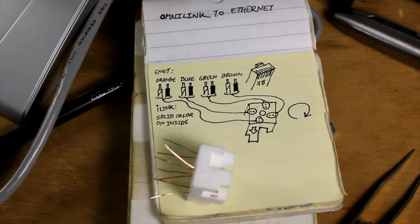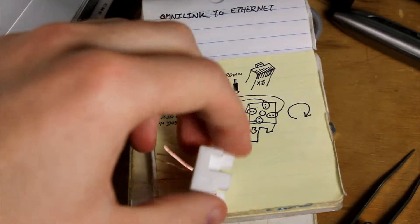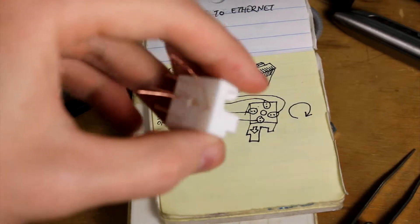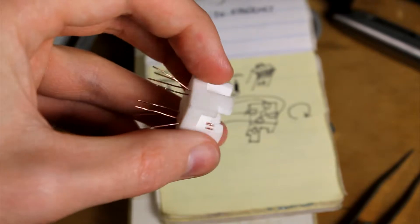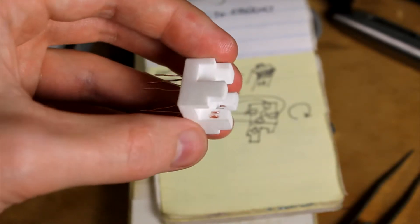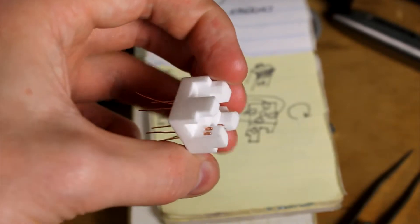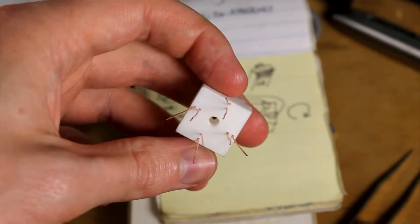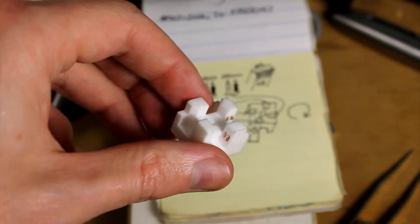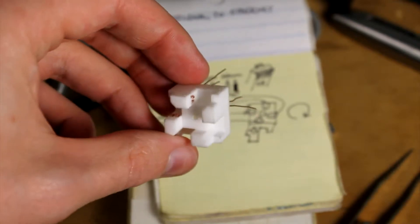Alright, so this video demos my first successful attempt to create an omni-link to ethernet adapter. As you can see, I've already begun to wire one of these for copper. It took me a few minutes to figure out the method for how to do that efficiently and reliably. It turns out it works really well, and after I demo the wiring process, I will show it in action.